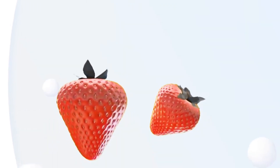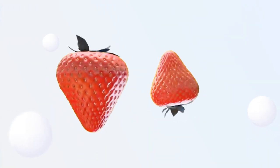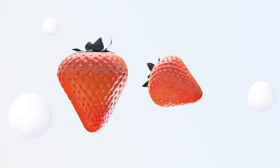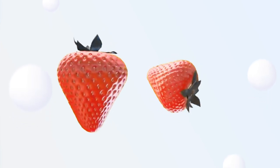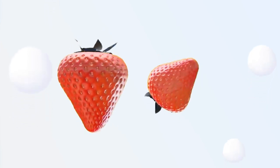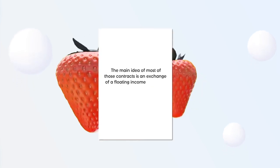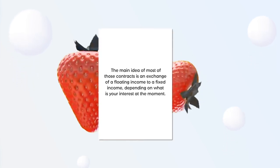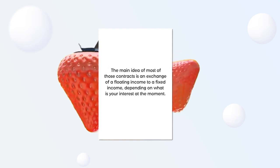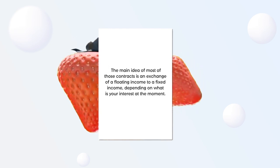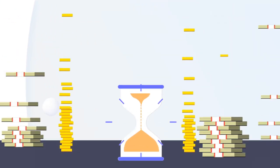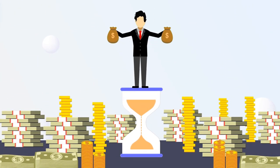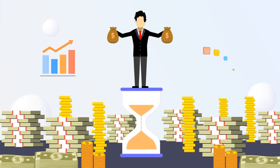As you've probably already guessed, strawberries are certainly not the most popular asset for derivatives, but you can replace them with literally any other valuable thing. The main idea of most of those contracts is an exchange of a floating income to a fixed income, depending on what is your interest at the moment. Through derivatives, one party can hedge its position while the other tries to get profit from speculation on a future price of an asset.